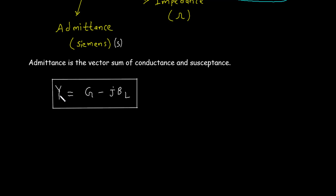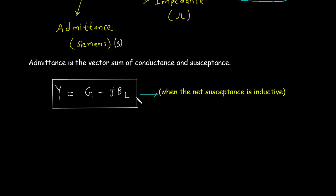Admittance Y = G − jBL, where G represents conductance and BL represents inductive susceptance. This is the admittance when the net susceptance is inductive. G is the real part and BL is the imaginary part.